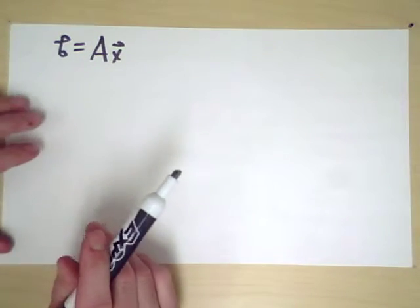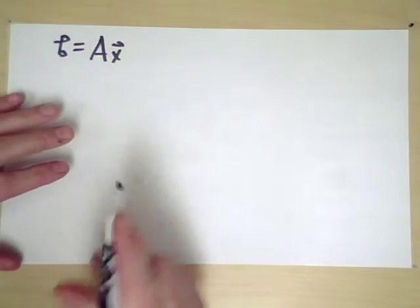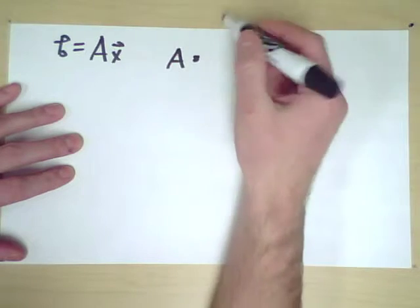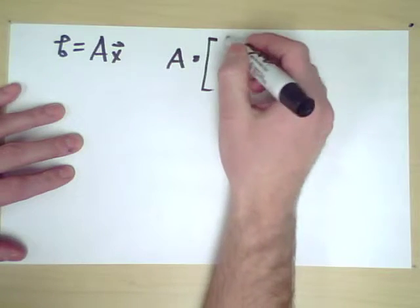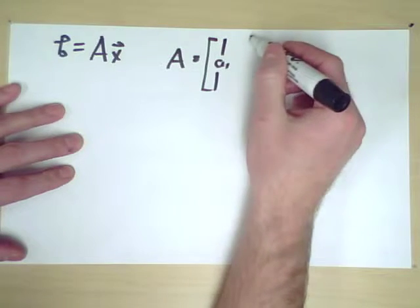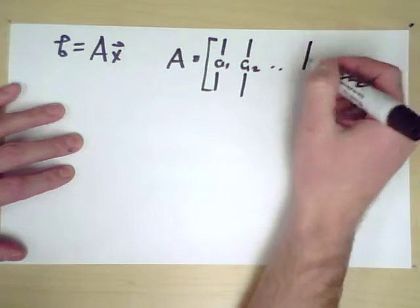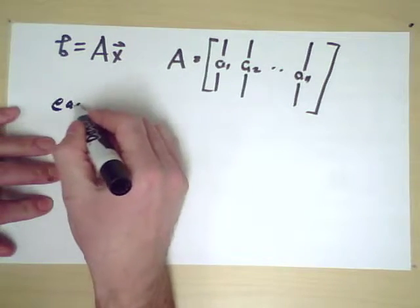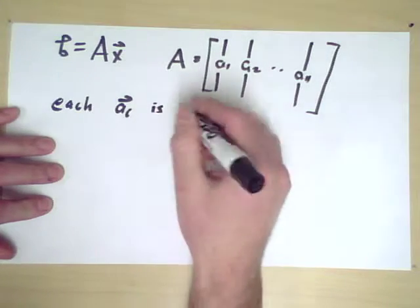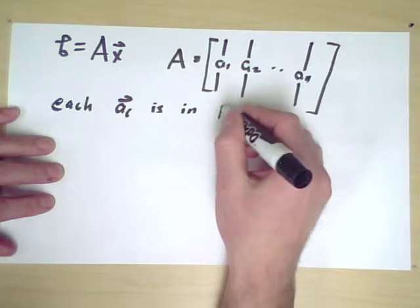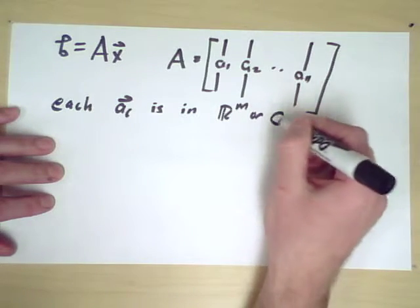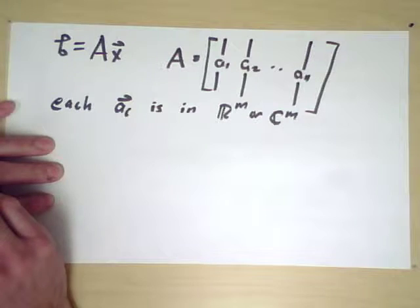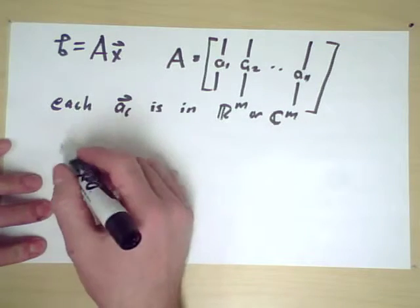But there's another way of thinking about this which is often very beneficial geometrically and computationally. So let's think about A not so much as being a function comprised of coefficients, but rather as a list of vectors. So the first column of A is a_1, the second column of A is a_2, and so on. The n-th column of A is a_n. Each of these vectors, each a_i vector is in either R^m or C^m, depending if we're using real or complex numbers. And that means it's the same length as the vector b. It lives in the same space as b.